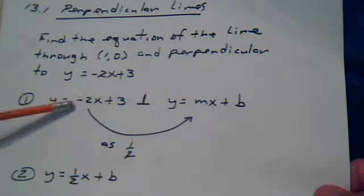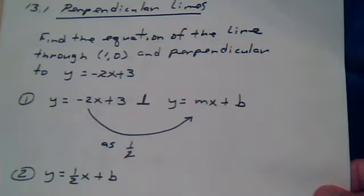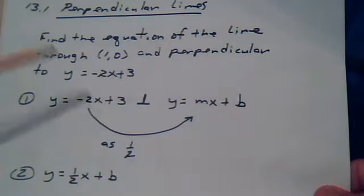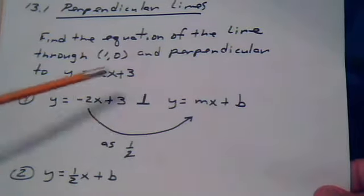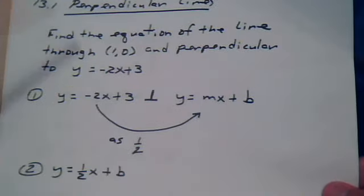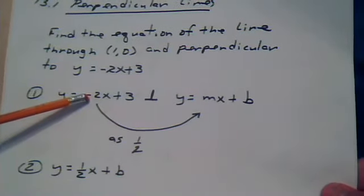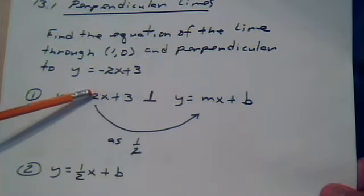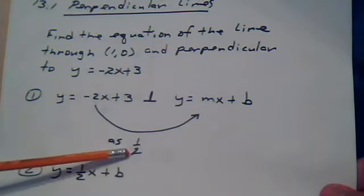So what is the relationship between perpendicular lines? The relationship lies in the slope, which is the number in front of the x. The relationship between the slopes is the following. If this is a negative 2, then you take the reciprocal, which is 1 half,